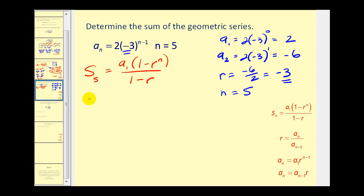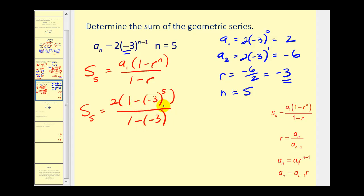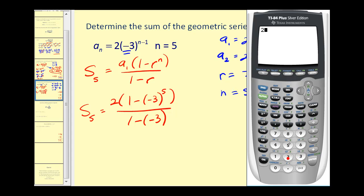The sum of the first five terms equals a sub one, which is two, times one minus r to the power of n, all divided by one minus r. We have to be careful about the signs. In the numerator we have two times the quantity one minus negative three to the fifth power, and the denominator is one minus negative three, which equals four. The partial sum is one hundred twenty-two.